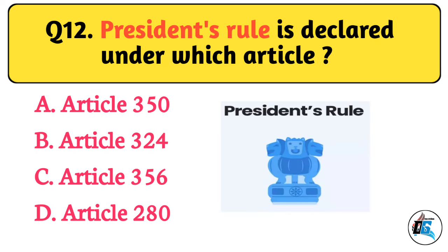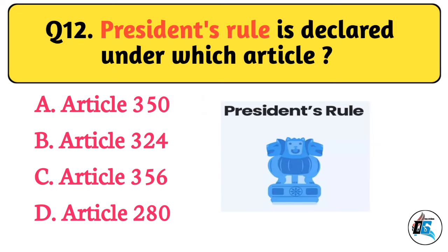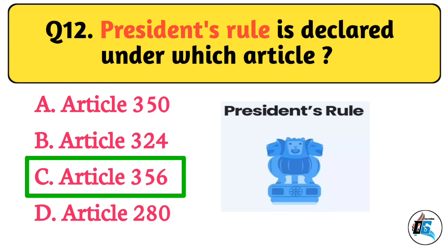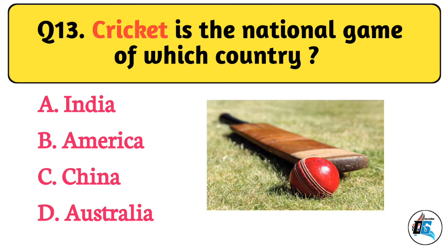Question No. 12. President's rule is declared under which article? The right answer is Option C: Article 356.